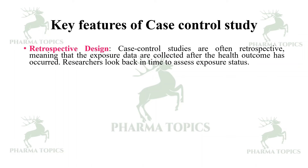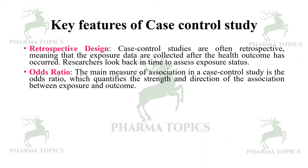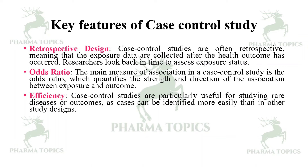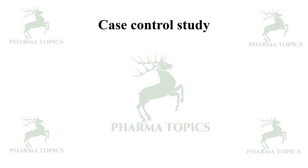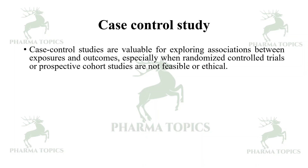Retrospective design: case control studies are often retrospective, meaning exposure data are collected after the health outcome has occurred — researchers look back in time to assess exposure status. Odds ratio: the main measure of association in a case control study is the odds ratio, which quantifies the strength and direction of association between the exposure and the outcome. Efficiency: case control studies are particularly useful for studying rare diseases or outcomes. However, they are susceptible to recall bias and other biases; efforts are made to control for potential confounding factors.